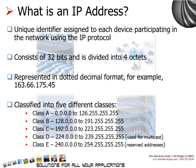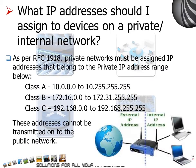Further, IP addresses are divided into five classes: namely class A, B, C, D, and E. How much of any given address is the network part and how much is the host part is determined by the class of the network. You would generally have a question like: what IP addresses should I assign to devices on a private or internal network? As per RFC, private networks must be assigned IP addresses that belong to the private IP address range, as mentioned. You should note that these addresses cannot be transmitted on the public network.